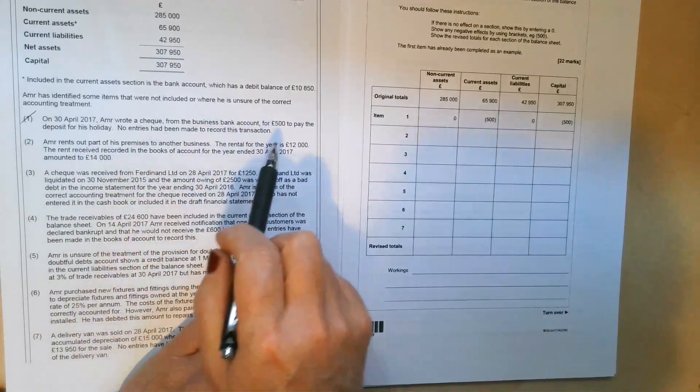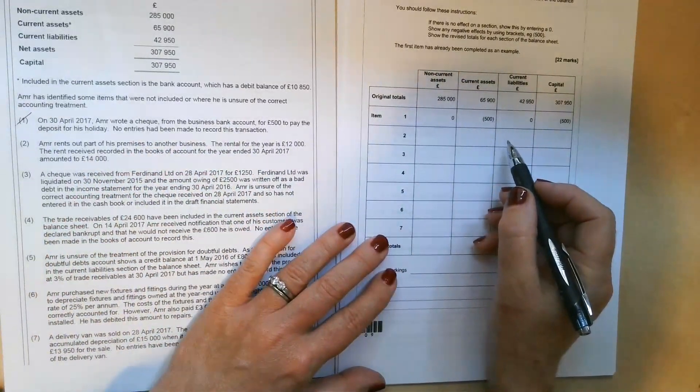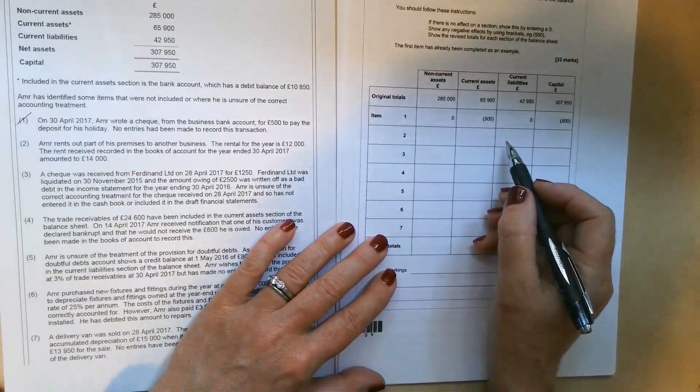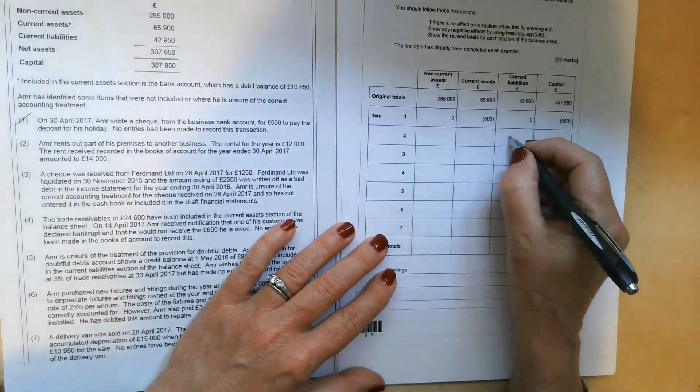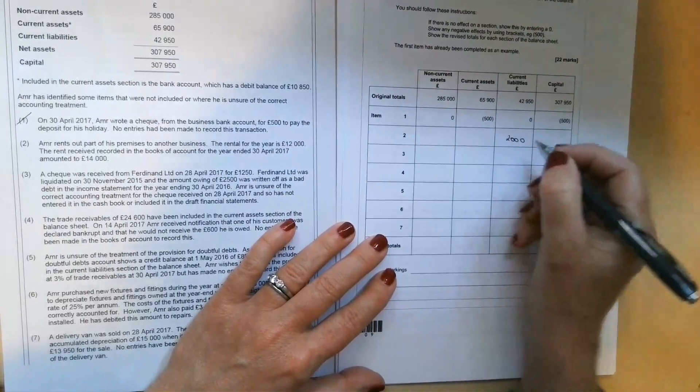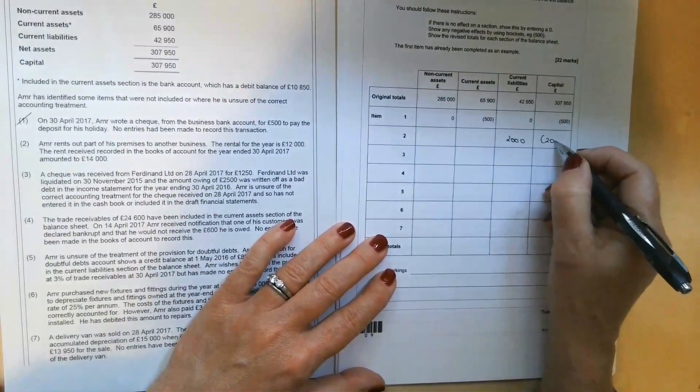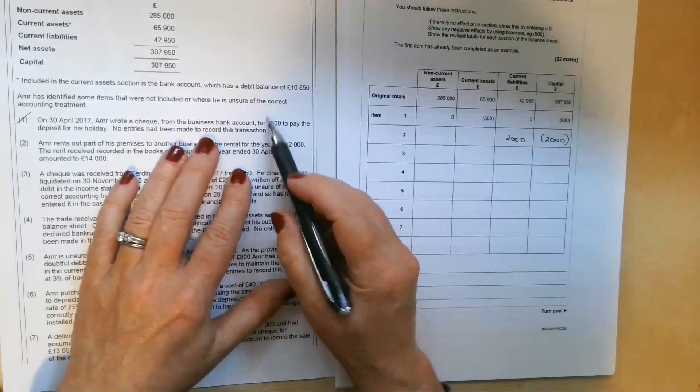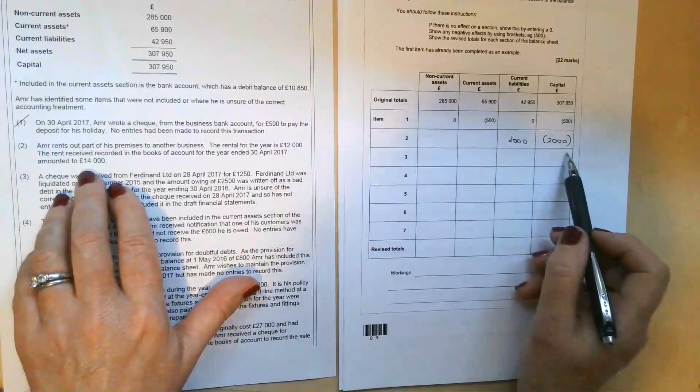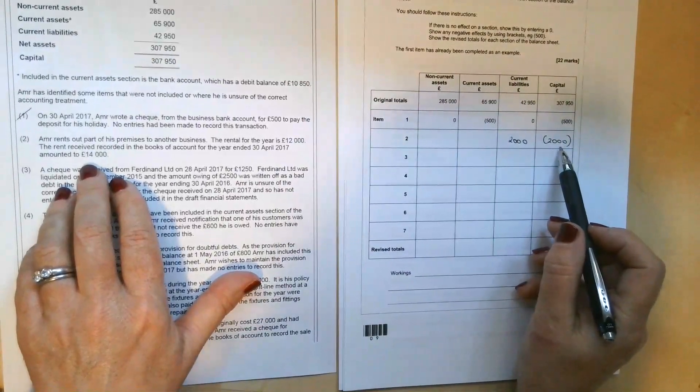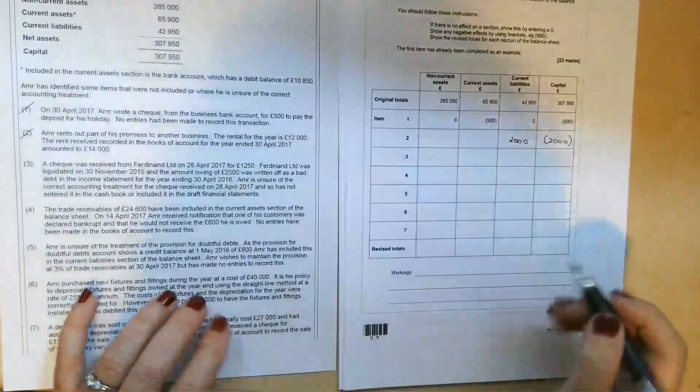So that means he's received £2,000 worth of rent in advance. So income received in advance is actually a current liability because it's prepaid income. So we need to add £2,000 into the current liabilities. We're also going to need to take £2,000 out of the capital account, because if we reduce the rent from £14,000 down to £12,000, our profit will go down by £2,000. So that's going to reduce his capital account balance. So that's number two dealt with.